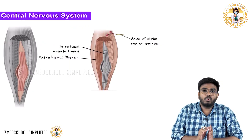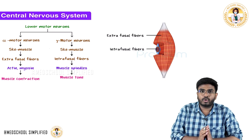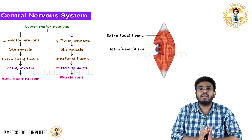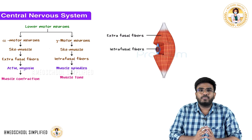We have discussed what the lower motor neurons are and the two different types: alpha motor neurons and gamma motor neurons. Hope the video is helpful. Thank you.